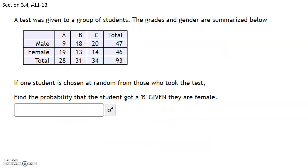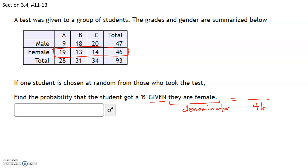A test was given to a group of students and the grades are summarized below. If a student is chosen at random from those who took the test, find the probability that the student got a B given they're female. The word 'given' means whatever comes after it is going to be your denominator and your sample space — you can only choose from people who identify as females. That's a total of 46 people. So your denominator is 46, and of those 46 people, 13 students got a B. That is your probability.